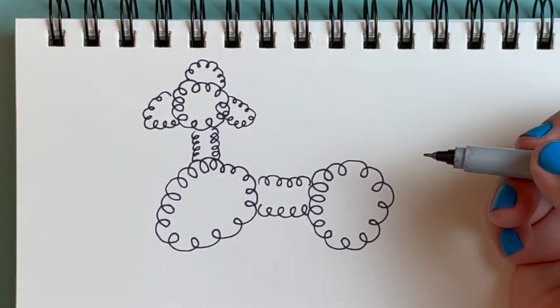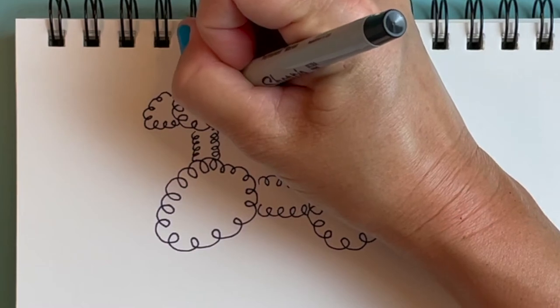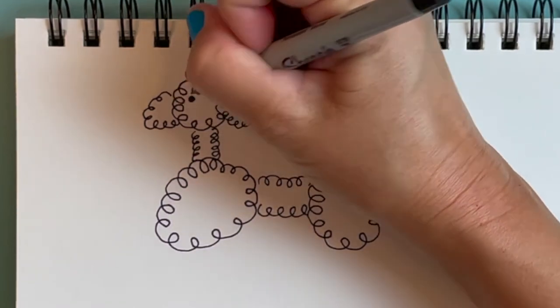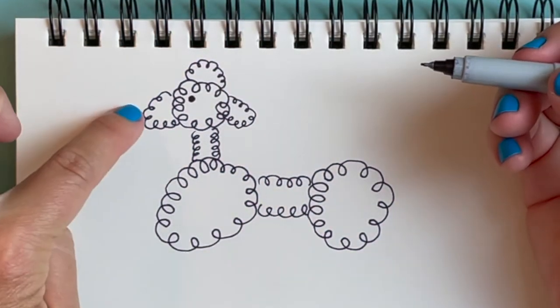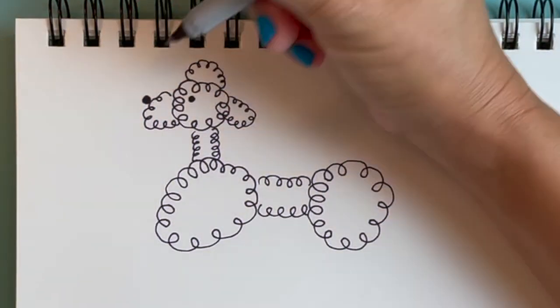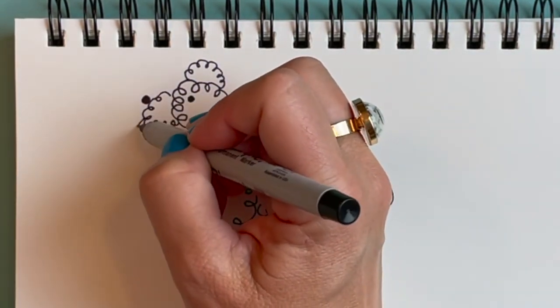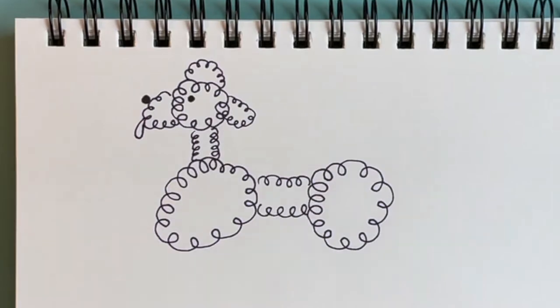To make it look like a face we need to add an eye. So I'm just going to draw a circle here. And I'm going to add a little black nose over here. You can even draw a little poodle's tongue sticking out like that.